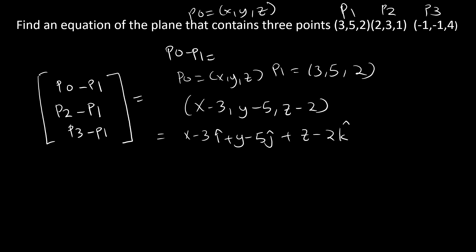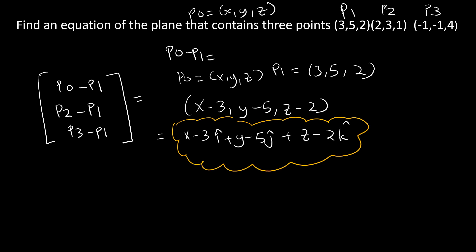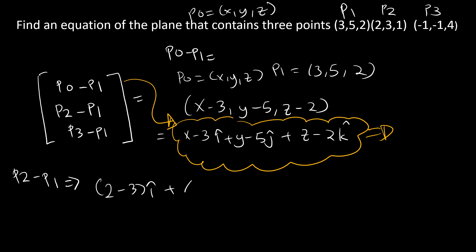Now let's do P2 minus P1 for the second row. P2 minus P1 gives us 2 minus 3 i-hat, plus 3 minus 5 j-hat, plus 1 minus 2 k-hat. This gives us negative i-hat, negative 2 j-hat, negative k-hat — so the second row is −1, −2, −1.